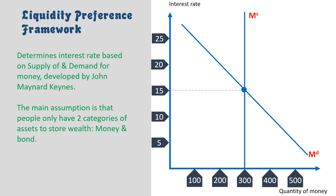Today we are going to learn the liquidity preference framework and how it helps us understand the relationship between interest rate and money. This framework determines interest rate based on supply of and demand for money, developed by John Maynard Keynes. The main assumption is that people only have two categories of assets to store wealth: money and bonds.